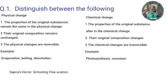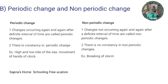The second distinction is periodic change and non-periodic change. Changes occurring again and again after an identified interval of time are called periodic changes. Changes that do not occur again and again after a definite interval of time are called non-periodic changes.